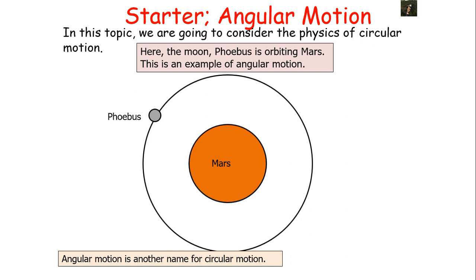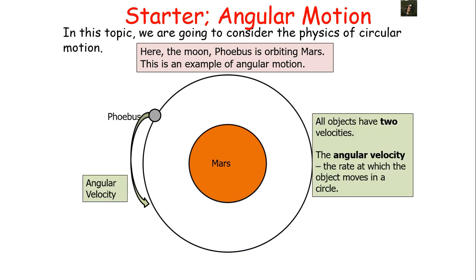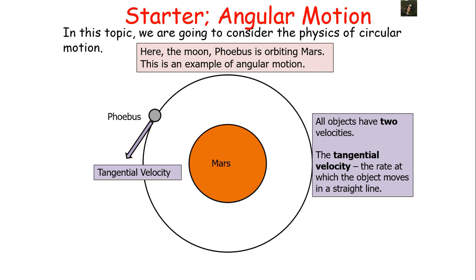In today's lesson I may say angular motion, circular motion, or radial motion — they all mean the same thing. When an object is moving in a circle it is carrying out angular motion, and all such objects have two velocities. The first type is the angular velocity: the rate at which the object moves in a circle. There is also a tangential velocity, which is the rate the object moves in a straight line if the force causing it to move in a circle were removed.